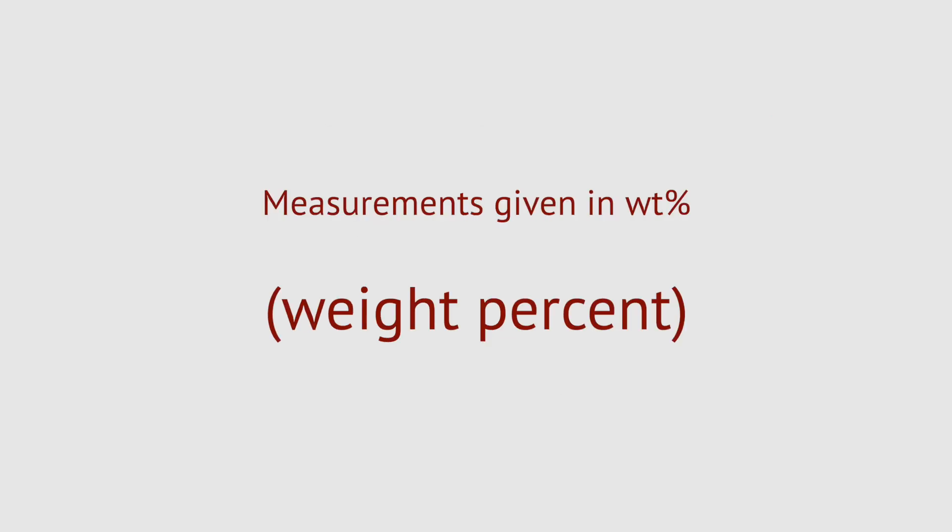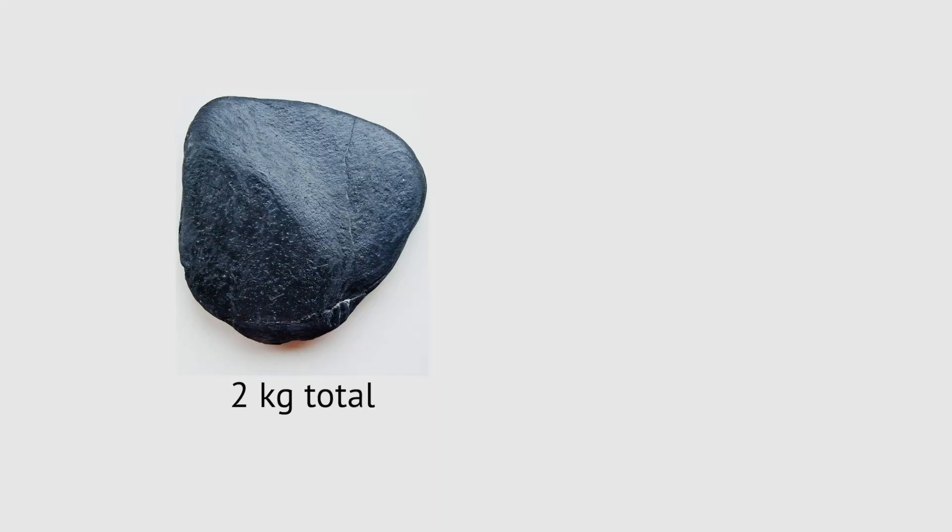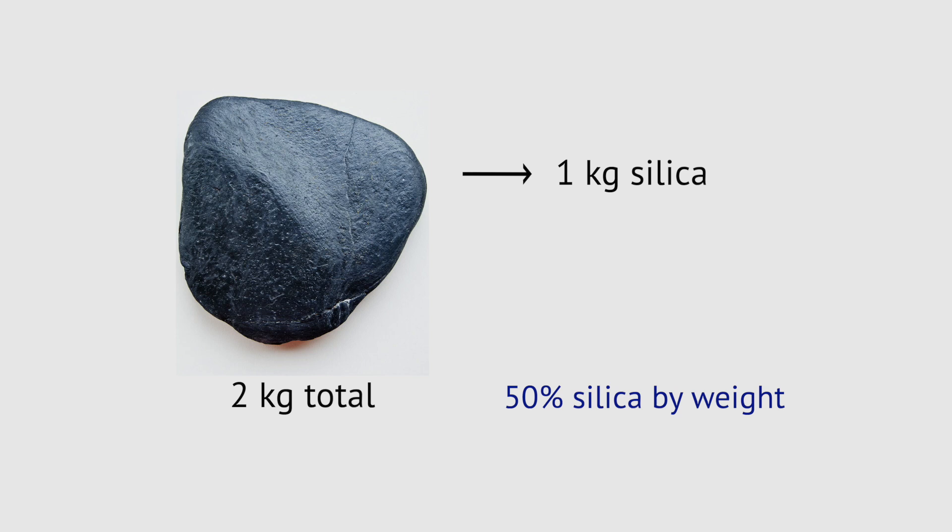The actual measurements used for this scheme are reported in weight percent. For example, a rock weighing two kilograms that contains one kilogram of silica would be reported as 50% silica by weight, because one is 50% of two.